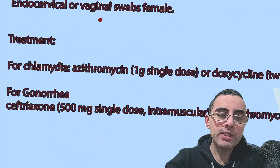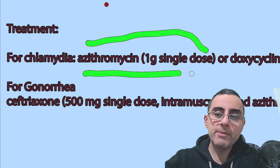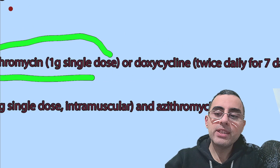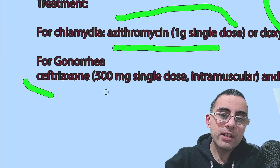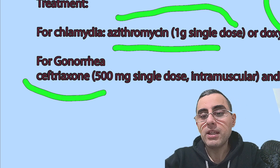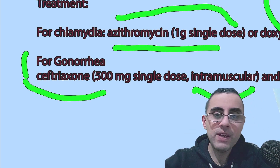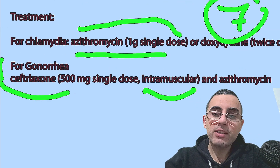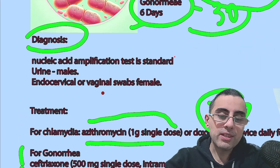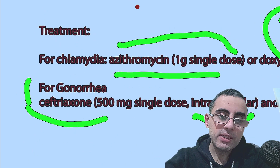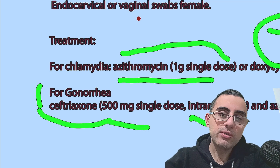Treatment is effective. For chlamydia, azithromycin single dose is effective, or doxycycline twice a day for seven days. For gonorrhea, a single intramuscular dose of ceftriaxone is usually effective. If there is suspicion that a person has both infections, then ceftriaxone plus azithromycin is the standard treatment. Resistance is not very common, and ceftriaxone treatment is usually sufficient.